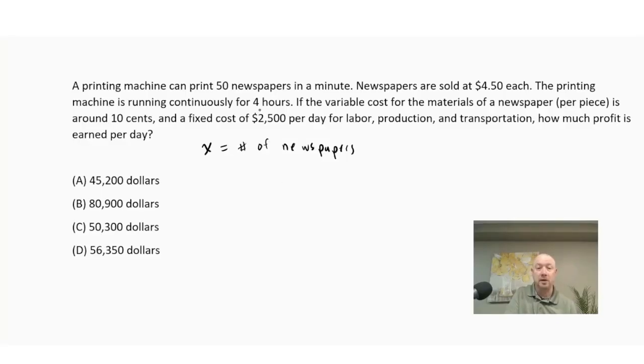We know that our printing machine can print 50 newspapers in a minute and the printing machine is running continuously for four hours. So if I take four and multiply it by 60, I'll get 240 minutes. And if I multiply that by 50, I'm going to get 12,000 newspapers I can make in that time period per day.